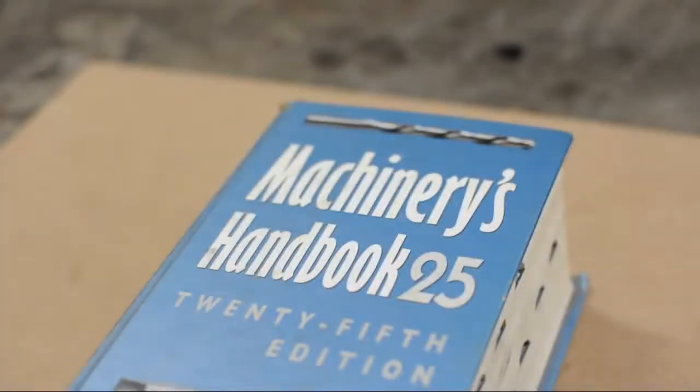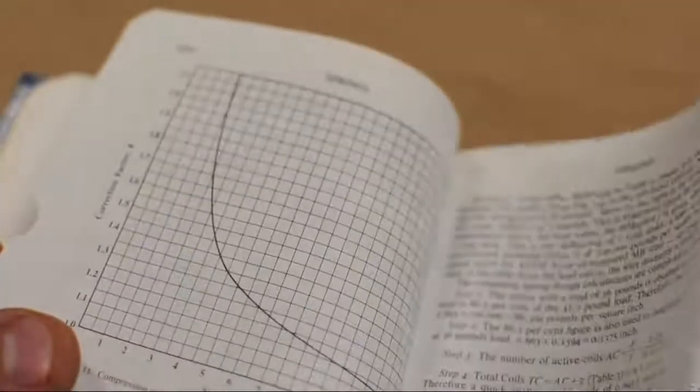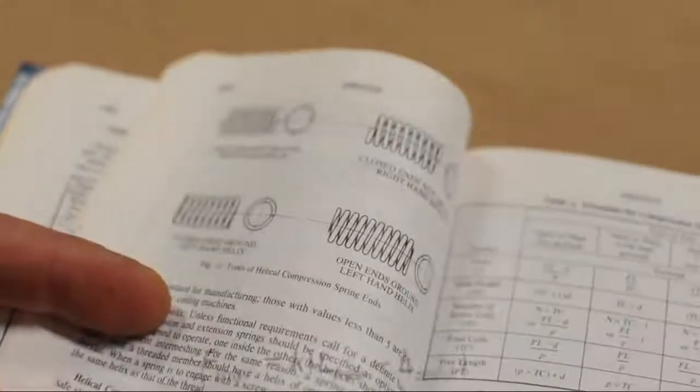However, if your masochistic tendencies run deep, and you'd like to design your own spring, the handbook is a good place to start. It's basic, but it'll get you a properly functioning spring. If your spring is complicated, or you're interested in things like how many cycles it's good for, you'll need to resort to some math.